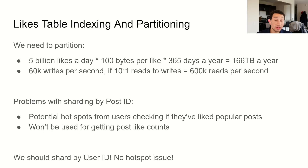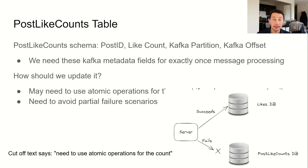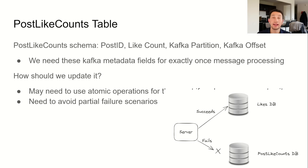It therefore seems beneficial to create an index on user ID and then post ID. This further speeds up queries to determine whether a user has liked a given post. We'll now introduce a second table, post like counts, which is responsible for keeping track of the number of likes on each post. It is a very simple schema — post ID and count — which represents the number of likes on that post.